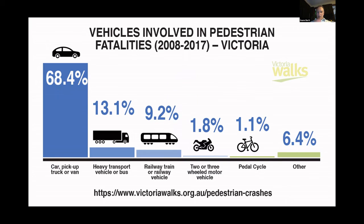When you look at vehicles involved in fatalities — from a different data source — you get a slightly different picture again, with trucks and buses becoming a much more significant factor, and also trains. Obviously, if you get hit by a train or a truck, you're in big trouble, so they tend to be more represented in the fatality stats.